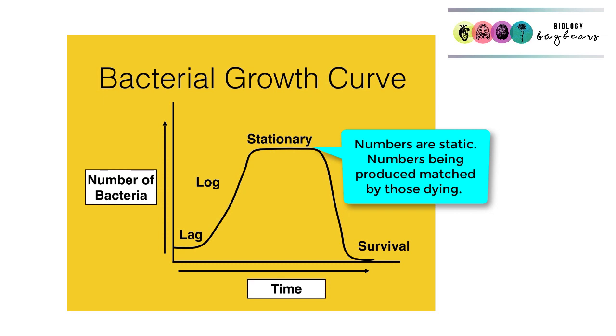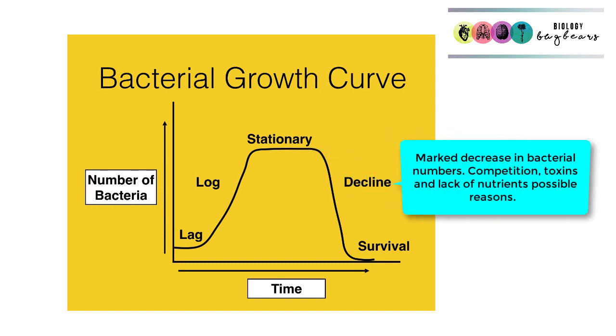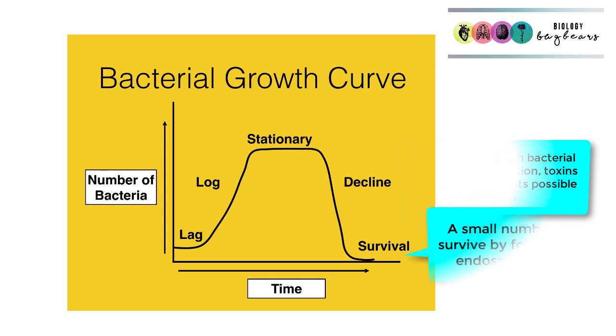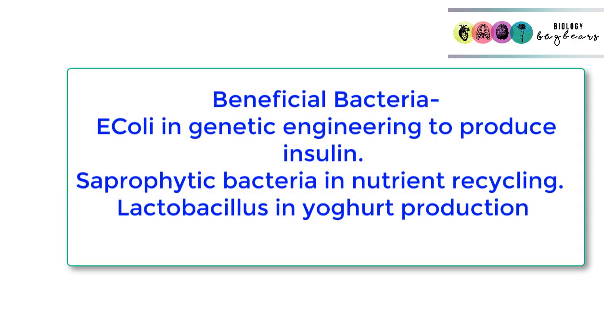Then we go into the decline stage where there is a marked decrease in the numbers of bacteria, and this is possibly because there is a build-up of toxins, there's more competition, and there's less food. Then finally we have some bacteria that will survive, and these survive usually by forming endospores.